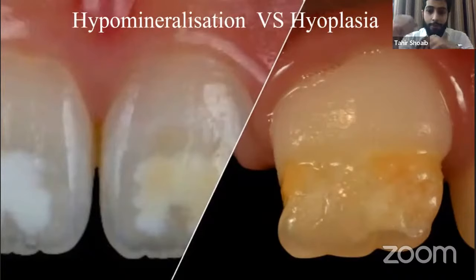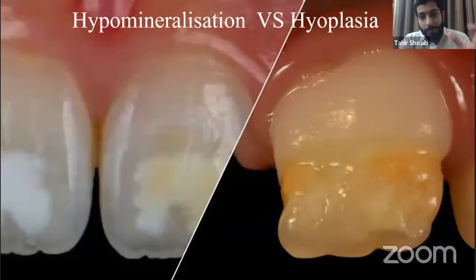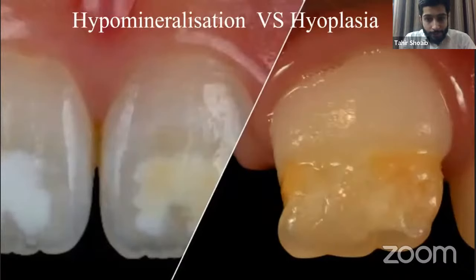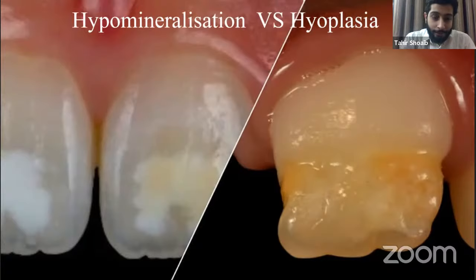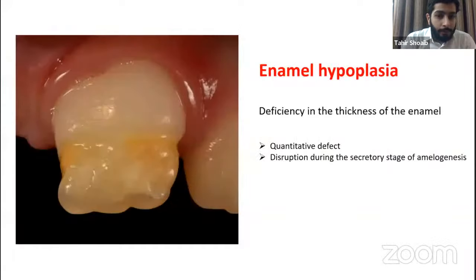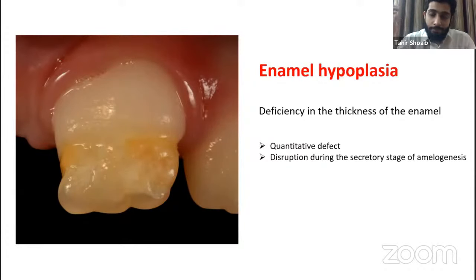There are different guidelines to treat MIH. But the first thing that's really important is to establish the difference between hypomineralization and hypoplasia. Although these conditions are quite different, they can really occur simultaneously at times as well, and hence it can get difficult to diagnose. Enamel hypoplasia is basically a quantitative defect — reduced enamel thickness. The enamel may be of normal quality, but it's in very reduced thickness. This condition is due to disruption during the secretory stage of amelogenesis.